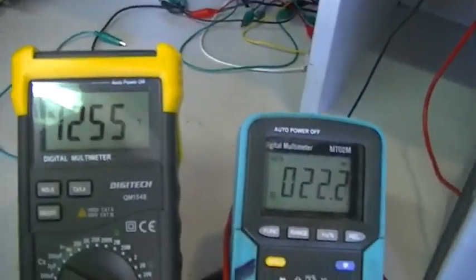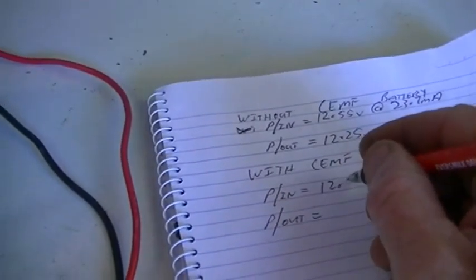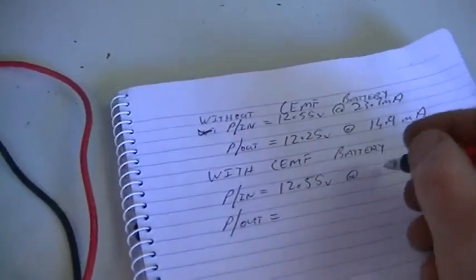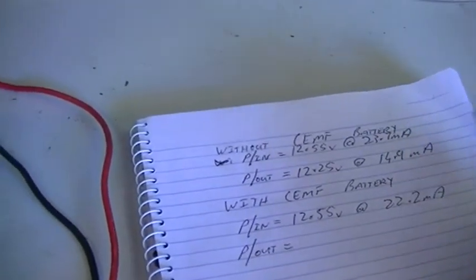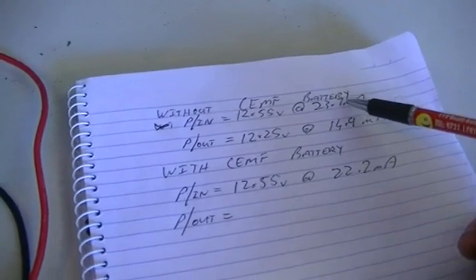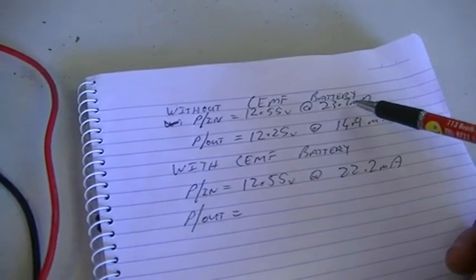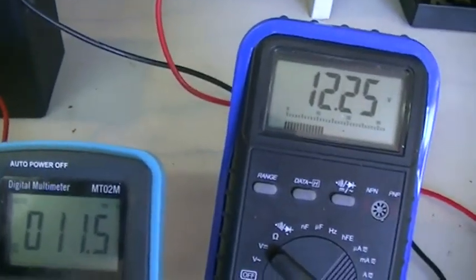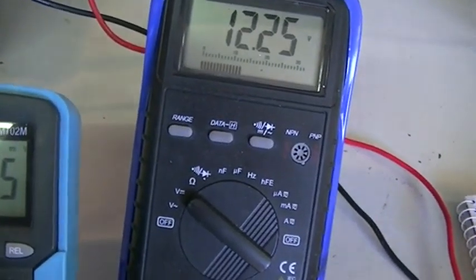So I'll switch it back on. Let's see, 12.55 volts at 22.2 milliamps, that is the input. We've dropped our input current by 1.5 milliamps, pretty good. 22.2 milliamps.